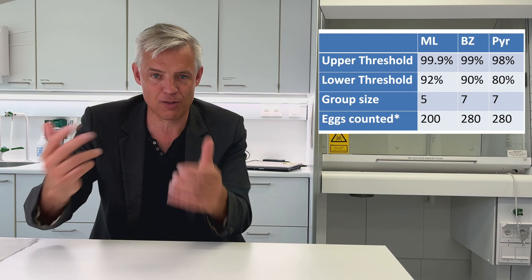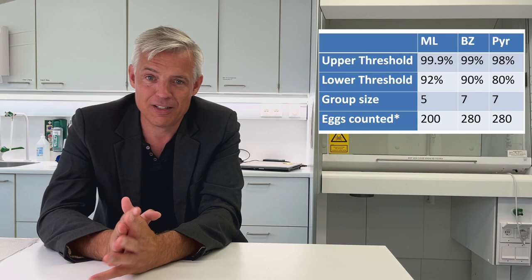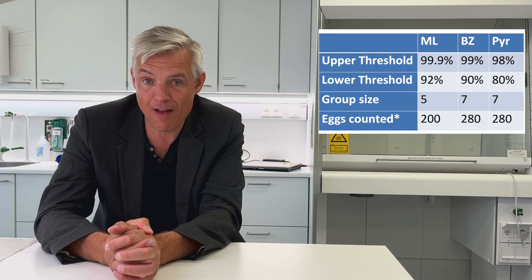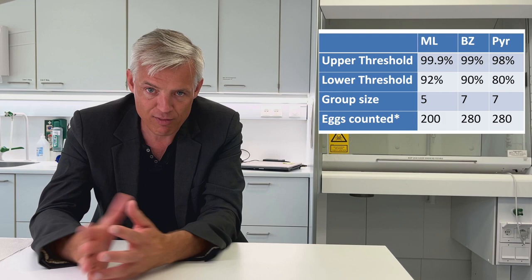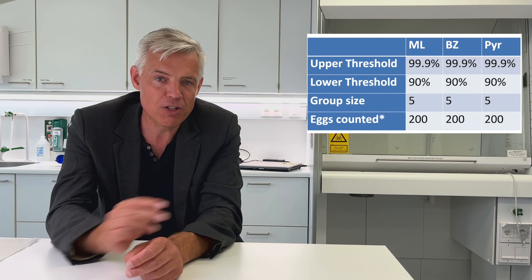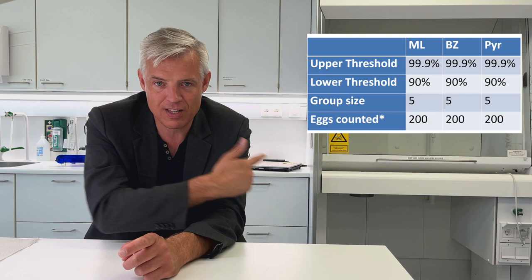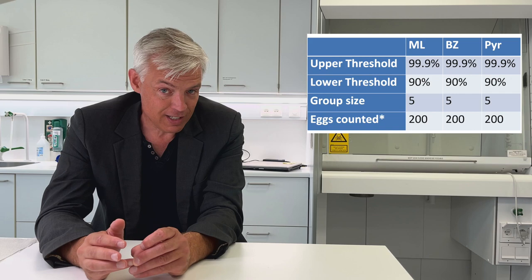You need more horses and more eggs counted when there's greater variability in the data — that's how you achieve sufficient statistical power. The absolute minimum is five horses. If you can't count enough eggs, you need more horses, and vice versa — there are options depending on technique. For ascarides, testing is simpler: the original efficacy levels were identical across all drug classes, so the thresholds, required egg counts, and minimum horse numbers are the same across classes.